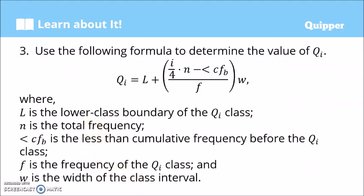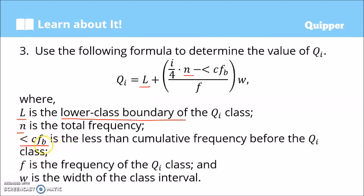Once we've determined the Q sub i class, we solve for the quartile using this formula. We have L — that's the lower class boundary of the Q sub i class. And n is the total frequency, found in the frequency distribution table. We also need the less than cumulative frequency before the Q sub i class. F stands for the frequency of the Q sub i class. And W is the width of the class interval.